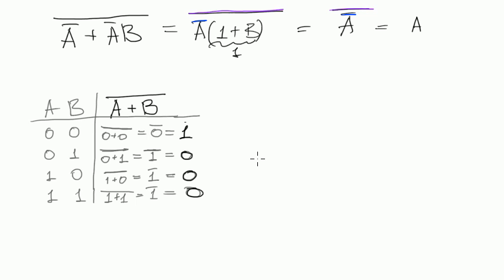And next step will be not obvious, but consider this expression. A negated multiplied by B negated. And what I would propose is to create a truth table for this one.